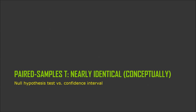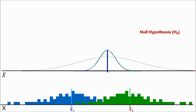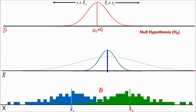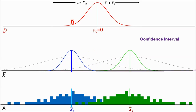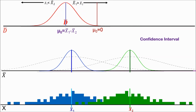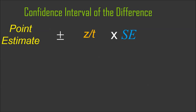Paired samples t is nearly identical conceptually to the independent samples t, although the process will be similar to the single sample t. The null hypothesis says that both distributions are the same that produced our sample — there's our d-bar compared to all possible d-bars. But the confidence interval doesn't assume that. The confidence interval just says our best guess is that the population values are the same as our sample values. Therefore, the expected difference in the population is the same as the difference we see in our sample. We find the two values that chop off the middle 95%, and that's our confidence interval for the difference between two paired sample means.